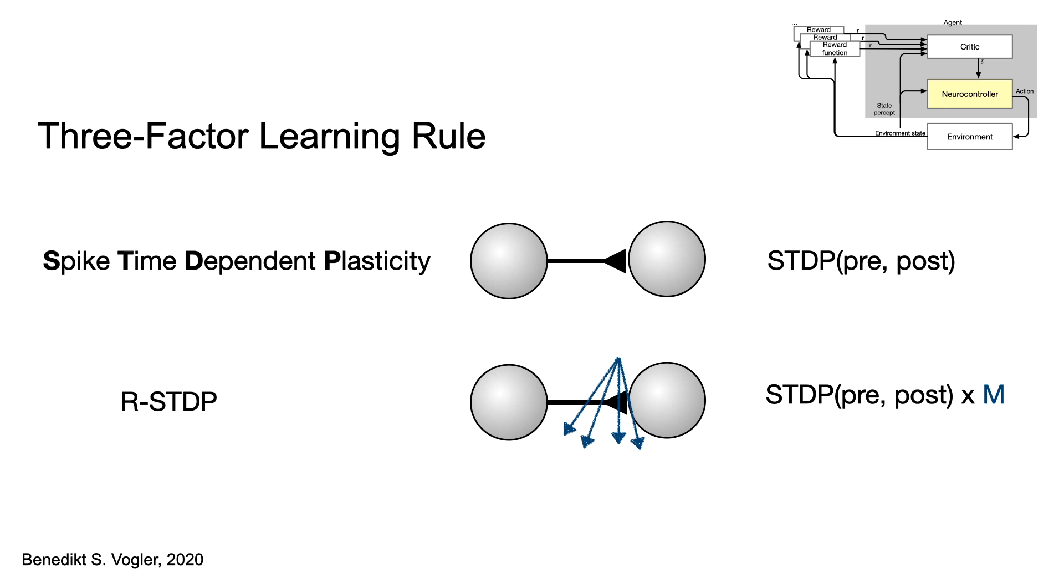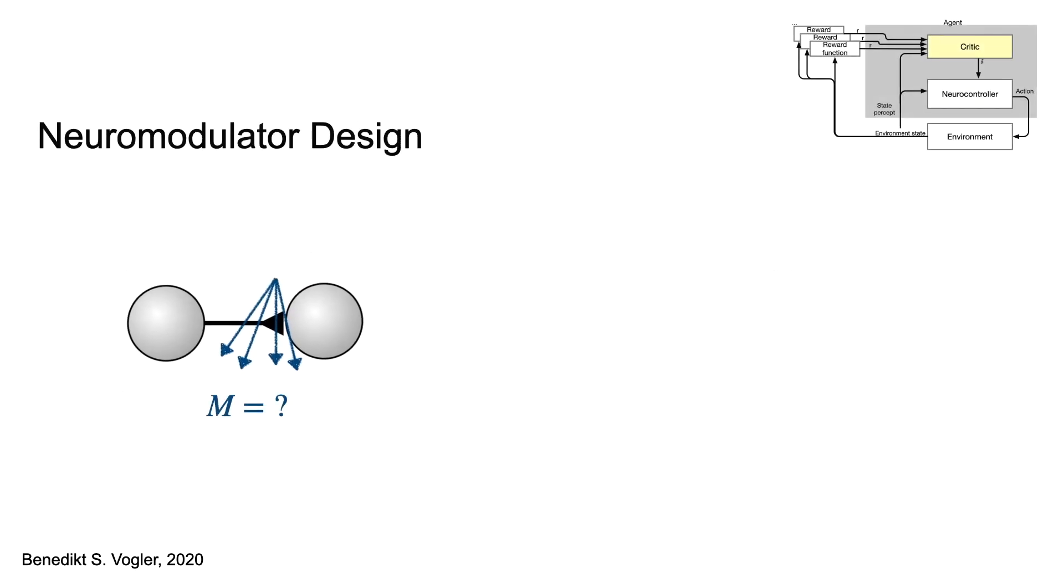In brains, the third factor is found in the distribution of the neuromodulator acetylcholine or dopamine, typically distributed in volume transmission. How to copy this mechanism for our artificial system? How must a neuromodulator be designed?